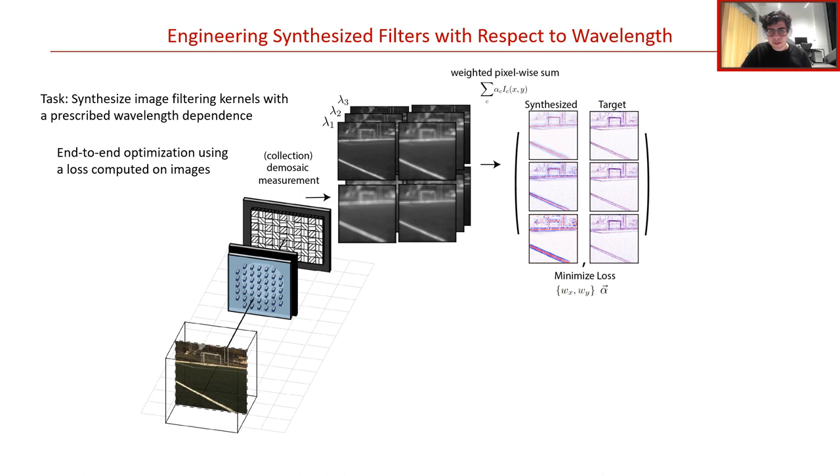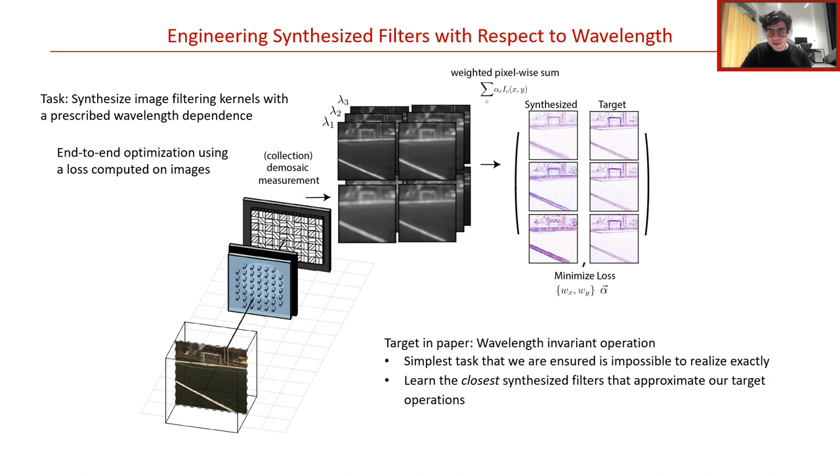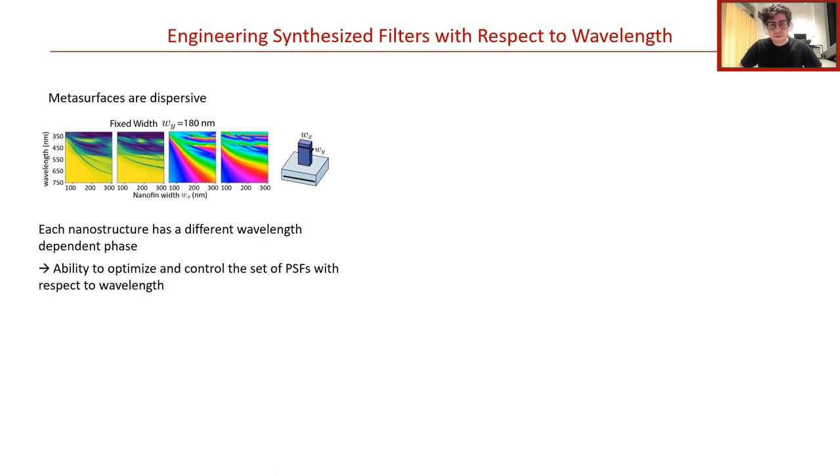While there are many different wavelength targets that we could have looked at in this paper, we focus attention on the task of producing a wavelength invariant Laplacian Gaussian kernel. The reason is because a wavelength invariant filter is the simplest task that we can ask for but be ensured is impossible to realize exactly. This principle of circumnavigating impossible requests is a key idea for this particular optimization algorithm. Although we know that we cannot produce the underlying filtering kernels exactly, we aim to learn the closest set of synthesized filters that approximate our target operation. In other words, they are those that produce synthesized images with similar statistics to those underlying the target transformations.